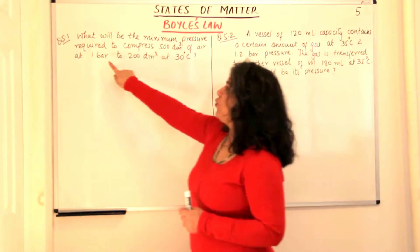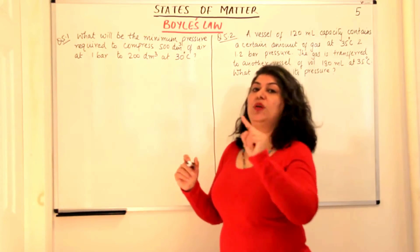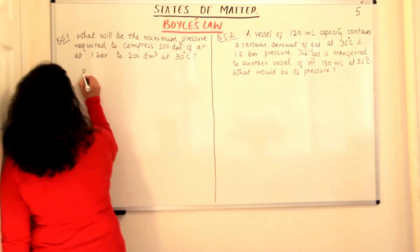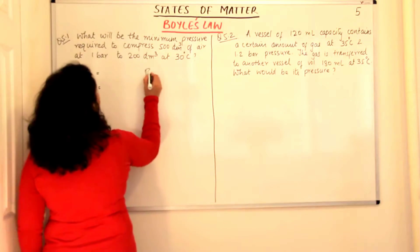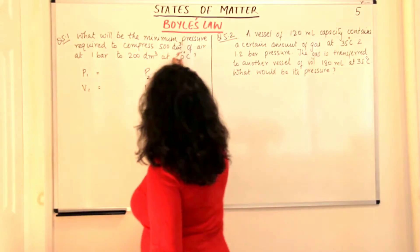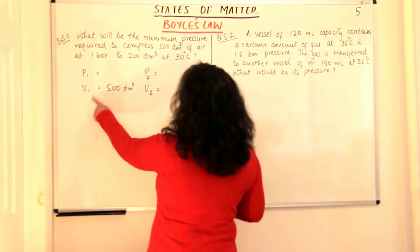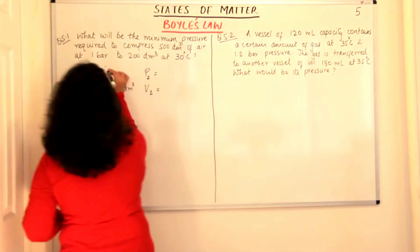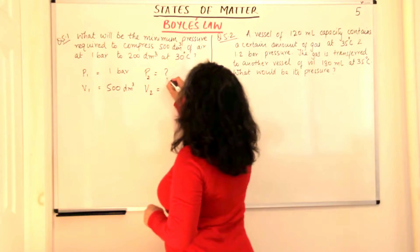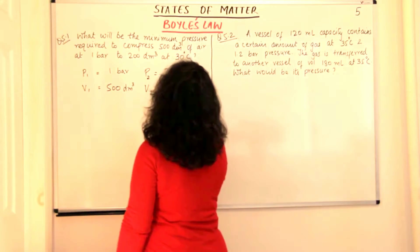We are compressing a gas from 500 decimetre cube to 200 decimetre cube. The pressure is 1 bar and the temperature is fixed at 30 degrees Celsius. The requirements for our equation are P1 V1 = P2 V2. So what we are looking for is P1, V1, P2 and V2. Now, 500 decimetre cube is volume V1, and pressure P1 is 1 bar. We are required to find P2, and V2 is 200 decimetre cube.